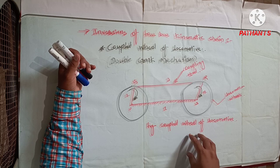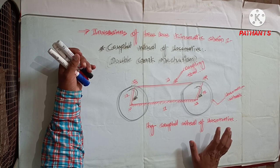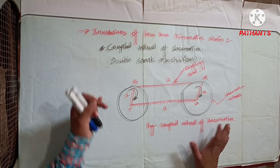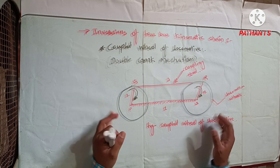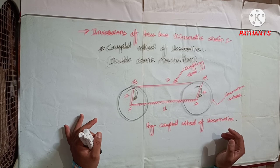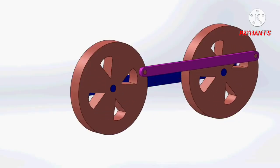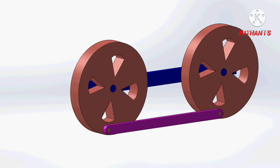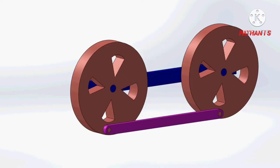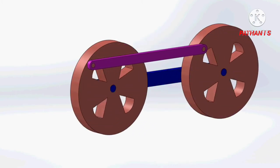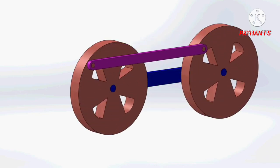Now let's see the animation of this mechanism. We can see that one crank rotation is in the coupling rod and the other crank rotation is also converted. In this mechanism we call it the coupling rod of the locomotive.